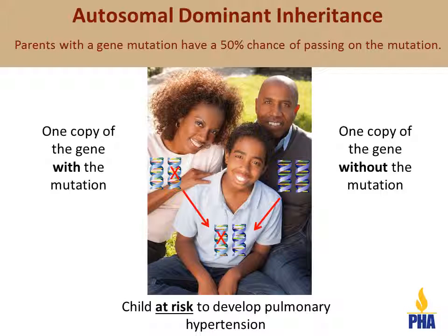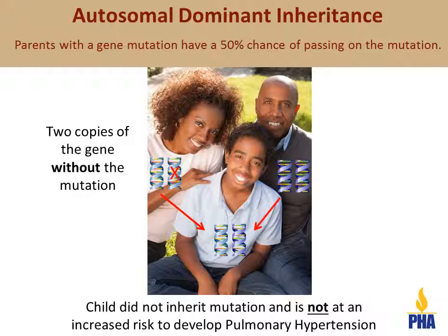Let us use this picture as an example. In this picture, the mother has a BMPR2 gene mutation and has pulmonary hypertension. The father has no BMPR2 gene mutation and has no increased risk to develop pulmonary hypertension. Their child has a 1 in 2 chance, or 50% risk, of inheriting the BMPR2 gene mutation from his mother. In this example, he did inherit the mutation. In another example, the child did not inherit the BMPR2 mutation from his mother. He has two copies of the gene without the mutation and therefore is not at an increased risk to develop pulmonary hypertension.